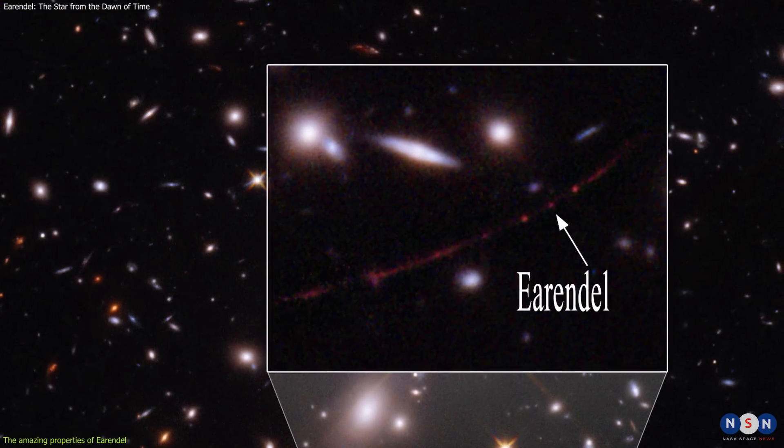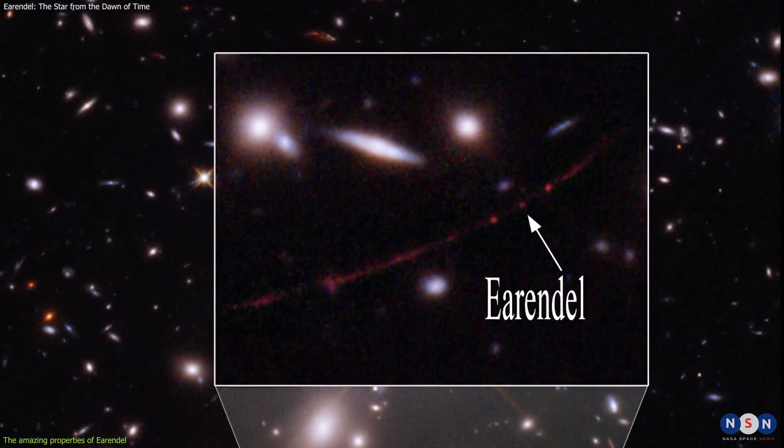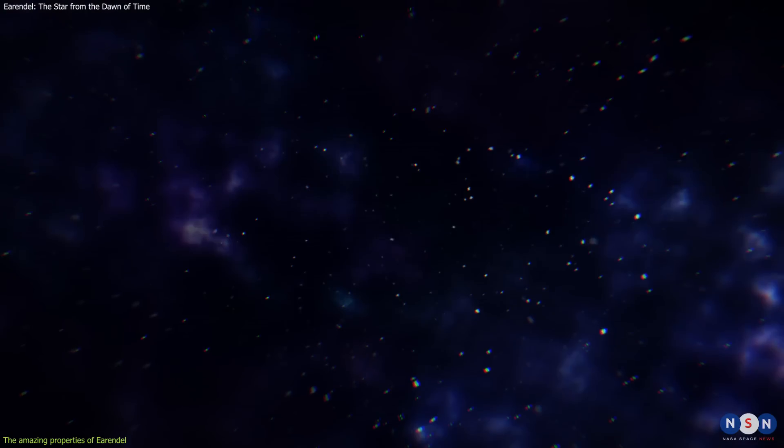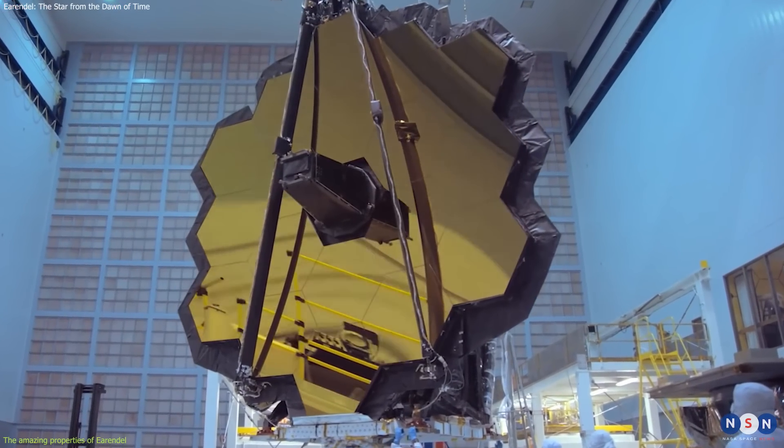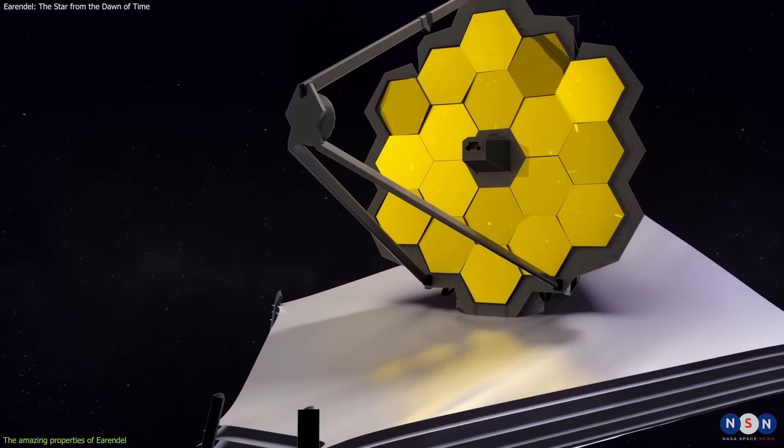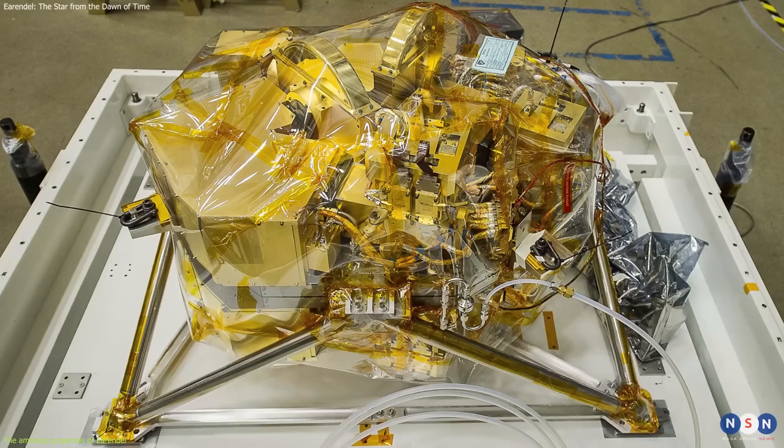However, because it is so far away, it appears very faint and small in the sky. In fact, it is impossible to see it with the naked eye, or even with the most advanced telescopes we have. So to measure its properties, Webb used its near-infrared camera, NIRCAM instrument.